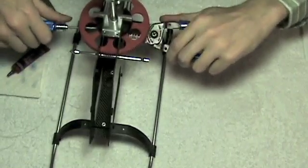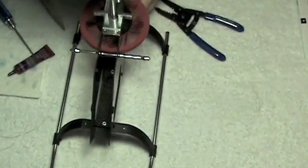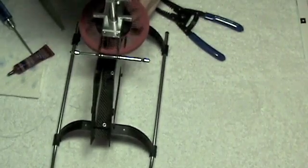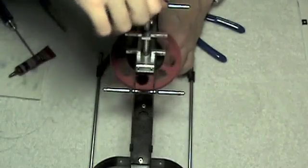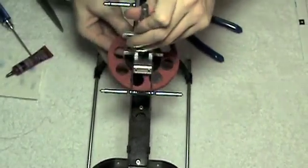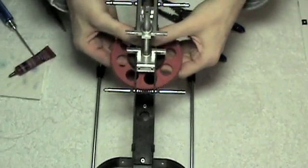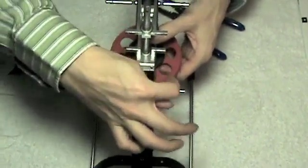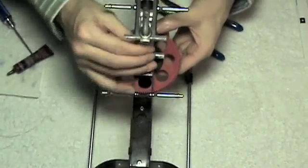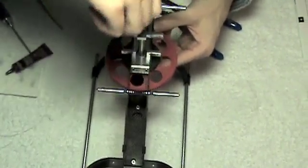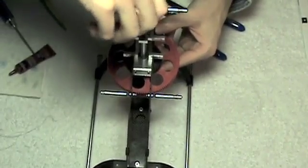You want to make sure that's nice and tight. Everything should spin nice and free. If it doesn't spin nice and free, your bearing blocks might not be lined up properly. So what you want to do is loosen up these four bolts on the side here, get it nice and aligned, and then it should spin nice and free.